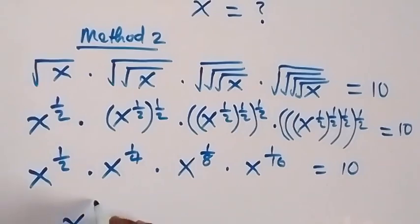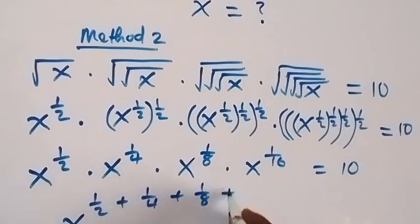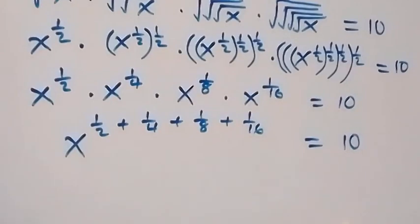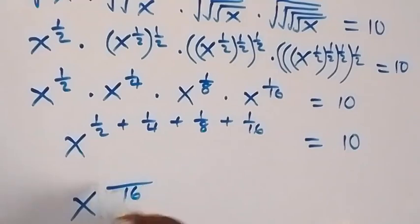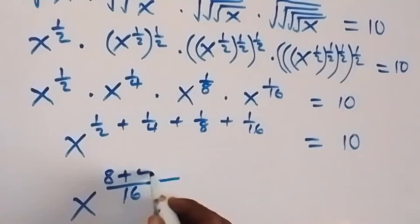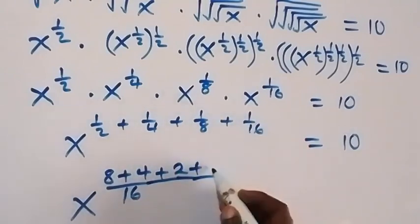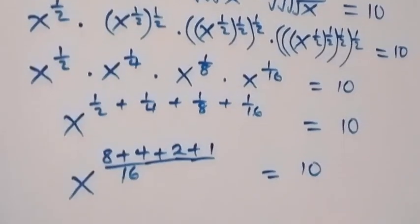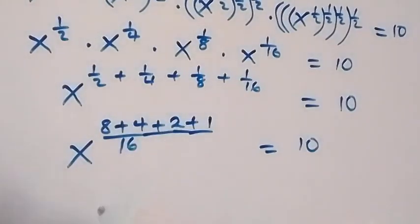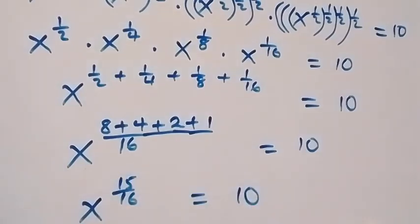Let's bring this together using the law of indices: x raised to power one half plus one quarter plus one eighth plus one sixteenth equals 10. Finding the LCM, which is 16: we have 8 plus 4 plus 2 plus 1 over 16, giving us x raised to power 15 over 16 equals 10.